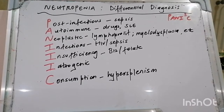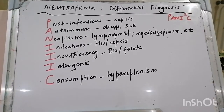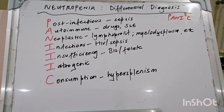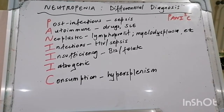Now, the concept of febrile versus non-febrile neutropenia: in the presence of fever — defined as a temperature above 38.3°C or above 38°C sustained for longer than one hour — in the context of a neutropenic patient, this is considered a medical emergency, as overwhelming sepsis can develop quite quickly.